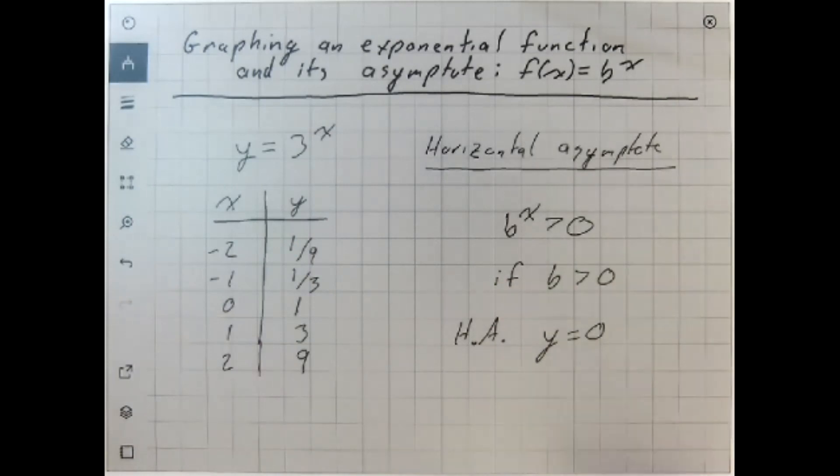Any expression in the form y equals b to the x will have a horizontal asymptote. If you have more going on, and there's another topic that introduces a little bit more going on, then the horizontal asymptote can change, it can shift, just like any other transformation of graph.